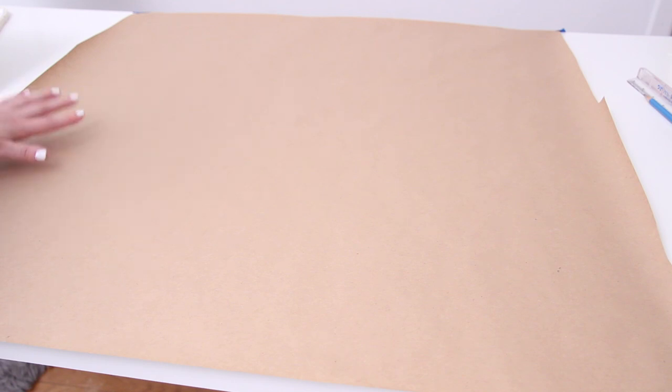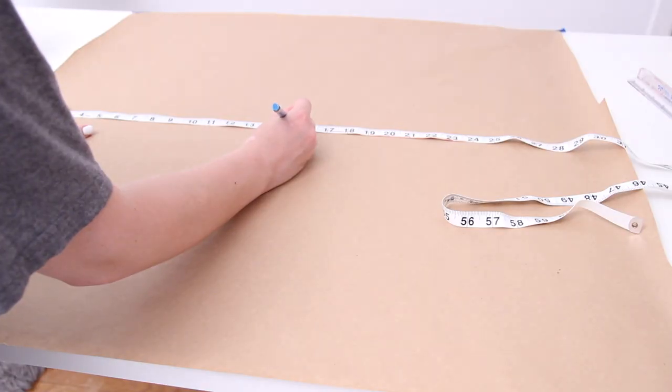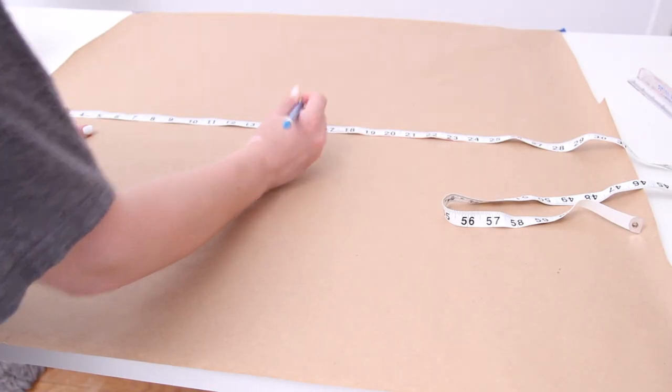To make this DIY palm leaf, I used a large piece of craft paper that's 30 inches wide. Then I measured up 15 inches and measured across and found that center point at 15 inches and made a dot there.